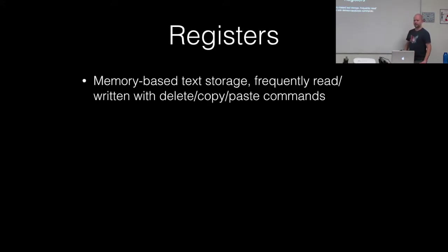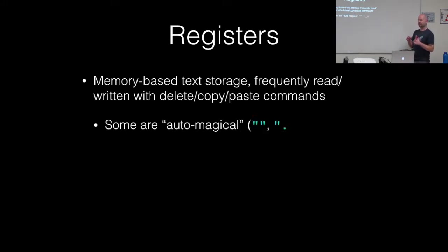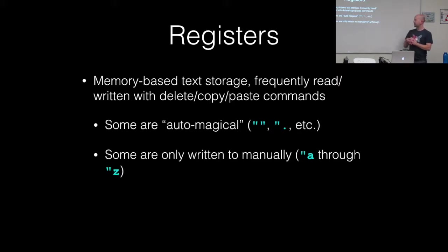I've said the word registers a few times — that was actually the topic of my last talk here, so I'm not going to go into them too in-depth. Essentially, they're just memory-based text storage, kind of like clipboards. There are some that behave in a magical way, automatically filling up with values. The ones we're most interested in for macros are the ones written into manually, like the E register. There are 26 of them, A through Z.